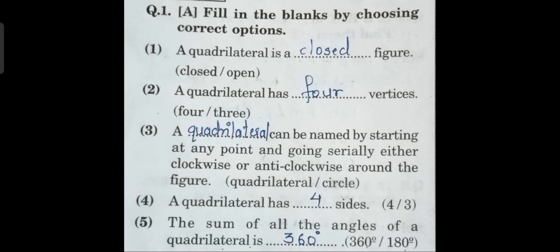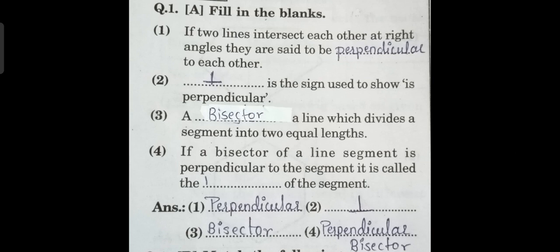Next fill in the blanks: a quadrilateral is a closed figure. A quadrilateral has four vertices — vertices means corners. A quadrilateral can be named by starting at any point and going serially either clockwise or anti-clockwise around the figure. A quadrilateral has four sides. The sum of all the angles of a quadrilateral is 360 degrees, while the sum of all the angles of a triangle is 180 degrees.